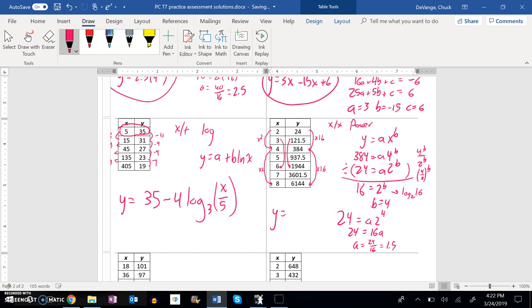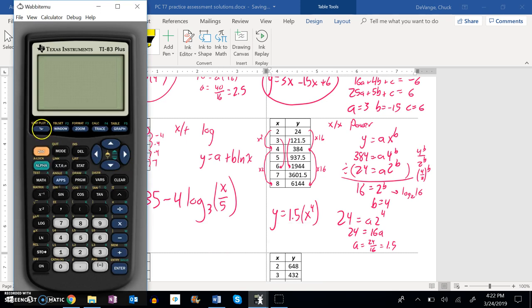So my model should be y equals 1.5 times x to the 4th. Let me check it on my calculator and see if I can match up the table with that. So 1.5 times x to the 4th power. x to the 4th. Peek at my table.